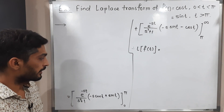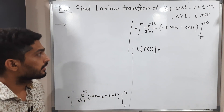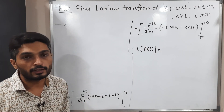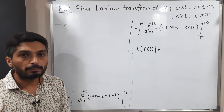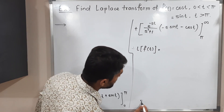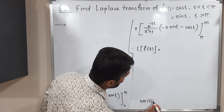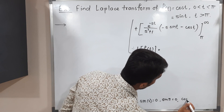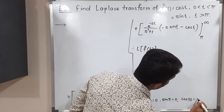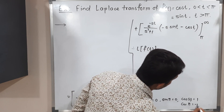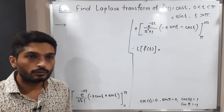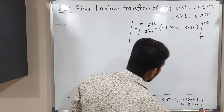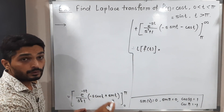Let us continue. We need to apply the limits. Some standard values to keep in mind: sin(0) = 0, sin(π) = 0, cos(0) = 1, and cos(π) = minus 1. Using these values, we put the upper limit π in the first bracket, giving e^(-πs) divided by (s² + 1).